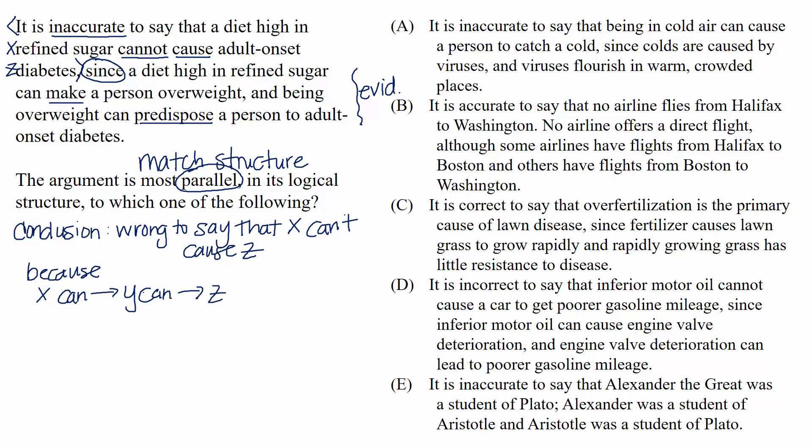If you don't like to think of it symbolically, you can describe the structure as the arguer says that it's wrong to say that something can't cause another thing because it's possible that there's an intermediate thing that connects them both. So now we can just find the argument that matches the structure without worrying at all about the topic.